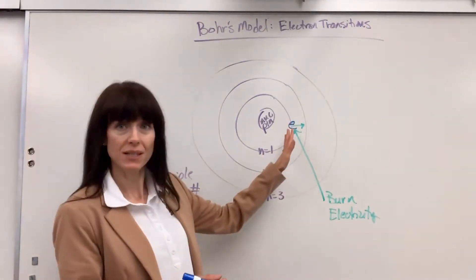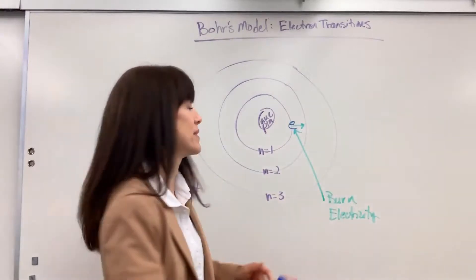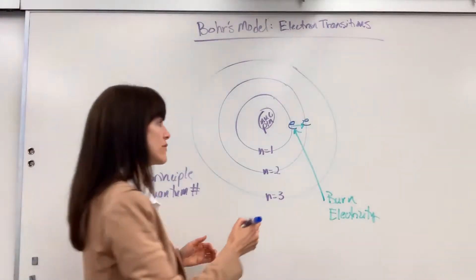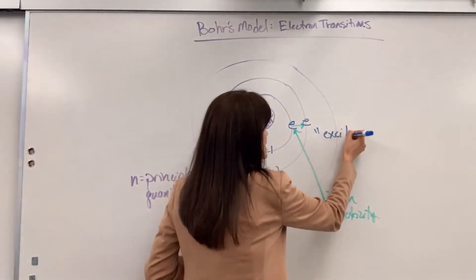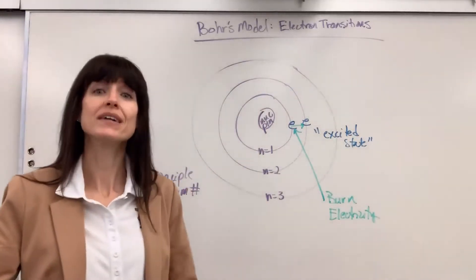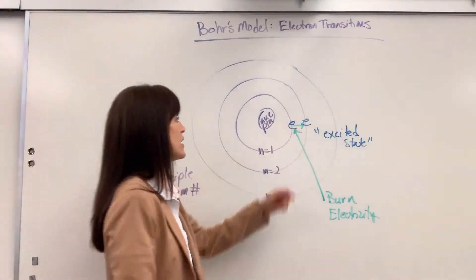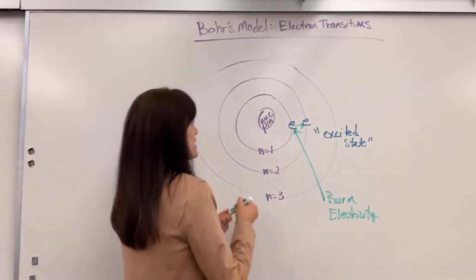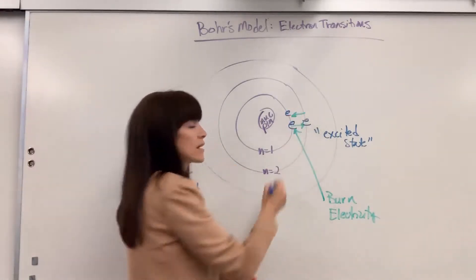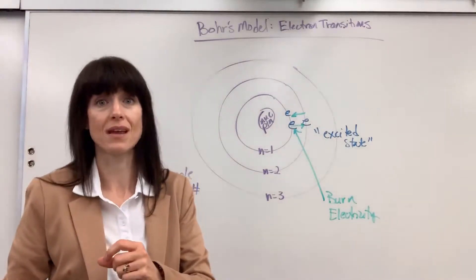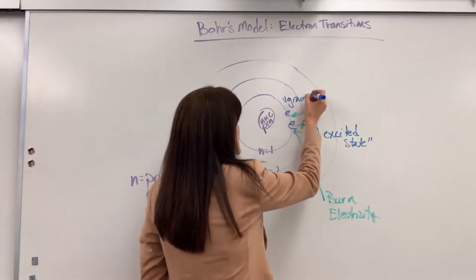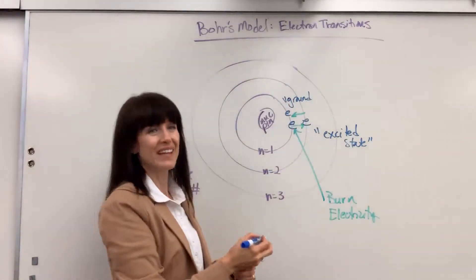So when energy is put into this, the electron goes up an energy level. When it moves to a higher energy level, this is called the excited state. But electrons always go home — this electron is going to go back to energy level 1. That original energy level is called the ground state — the lowest energy level where the electron can exist.